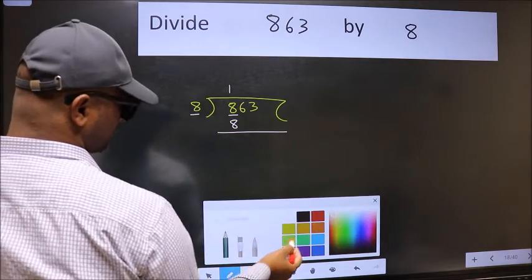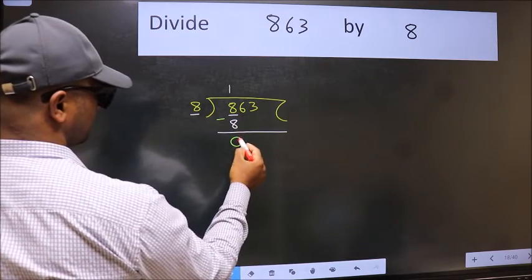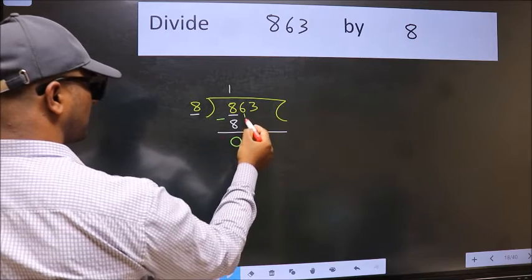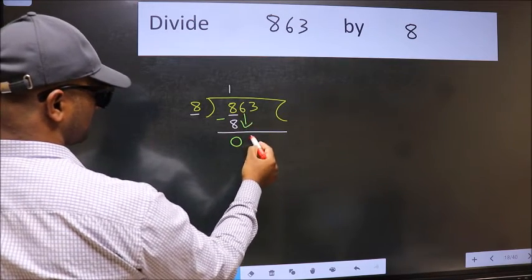Now we should subtract. We get 0. After this, bring down the beside number. So 6 down.